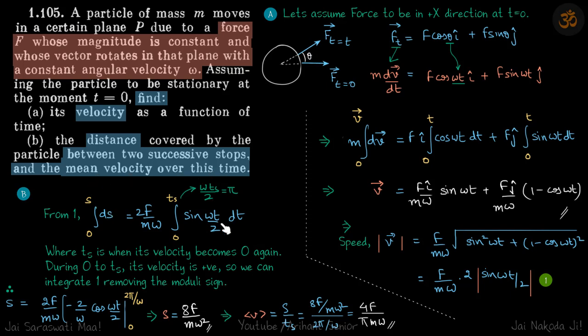Now the mean velocity over the time. Mean velocity is total distance upon total time. Total time is Ts and total distance we already figured out. If you just divide that you will get your answer which is mean velocity.